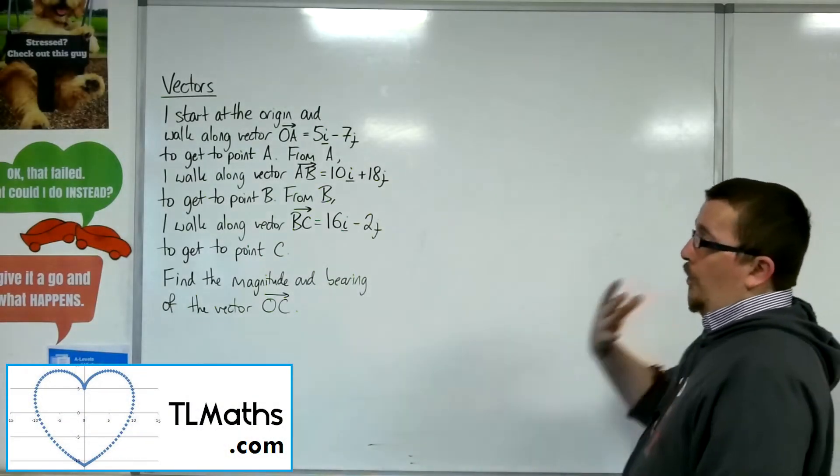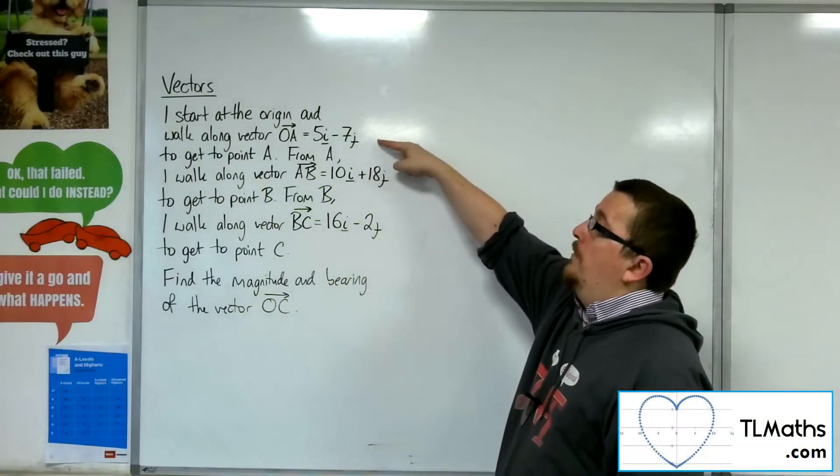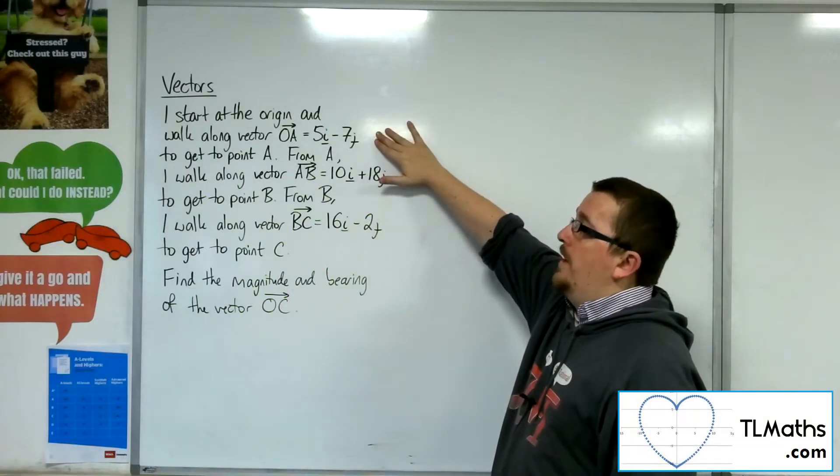Let's say I start at the origin and walk along the vector OA, which equals 5i minus 7j, to get to point A.